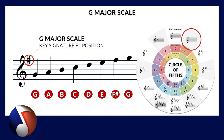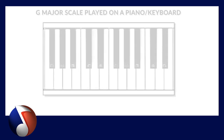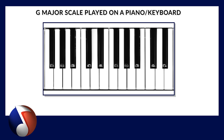Now let's start with the G major scale. The scale consists of seven different notes starting with the G and ending with the G an octave higher. Played on a keyboard, G major sounds like this.